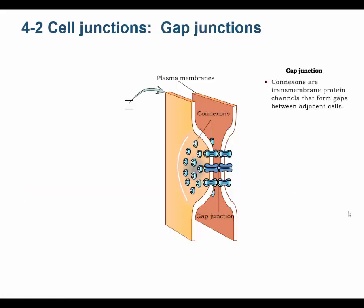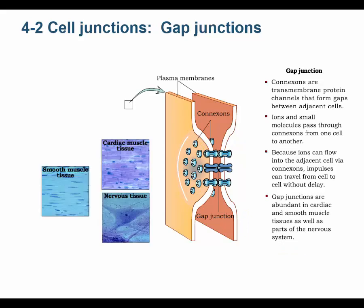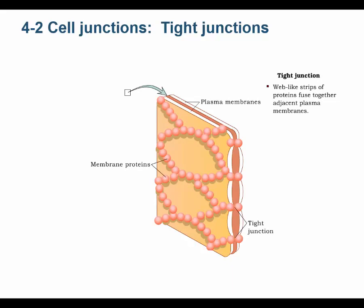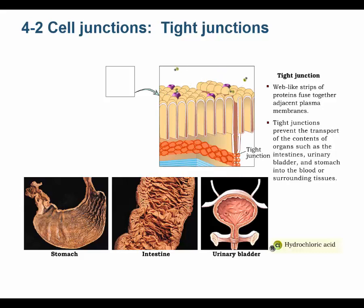The gap junction is an open communication channel. Transmembrane proteins called connexons join together to create tiny tunnels that form gaps between adjacent membranes, allowing ions and other small molecules — as well as electrical impulses — to pass freely from one cell to another. Gap junctions are particularly abundant in some types of muscle tissue. The tight junction is an area where the plasma membranes of adjacent cells are fused together, protecting underlying tissues by restricting movement of substances like hydrochloric acid between cells. Tight junctions are found in tissues lining the stomach, intestines, and urinary bladder.